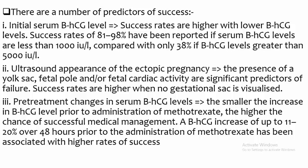There are a number of predictors of success. First, initial serum beta-hCG level: success rates are higher with lower beta-hCG levels. Success rates of 81% to 98% have been reported if serum beta-hCG levels are less than 1,000 international units, compared with only 38% if the beta-hCG level is greater than 5,000 international units. Second, ultrasound appearance: the presence of yolk sac, fetal pole, and/or fetal cardiac activity are significant predictors of failure; success rates are higher when no gestational sac is visualized. Third, pretreatment change in serum beta-hCG level: the smaller the increase in beta-hCG prior to administration of methotrexate, the higher the chance of successful medical management.